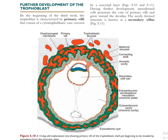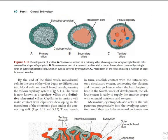The extra-embryonic somatic mesoderm was formed from beside the trophoblast and hypoblast. These cells contain genetic material similar to the cells in the embryo. Collecting cells at the level of the coelom is similar to collecting cells from the embryo — this is why chorionic villus sampling (CVS) of the extra-embryonic somatic mesoderm is highly used in examinations.